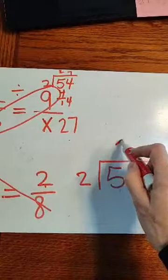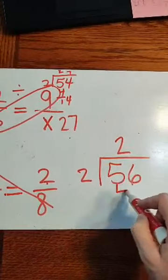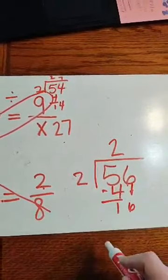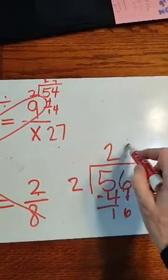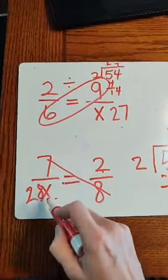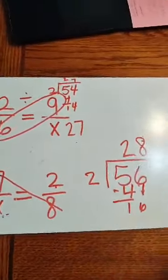2 goes into 5, 2 times, 2 times 2 is 4, subtract, 1, bring down, 6, 2 goes into 16, 8. So I find out x is 28. So 7/28ths is the same as 2/8ths.